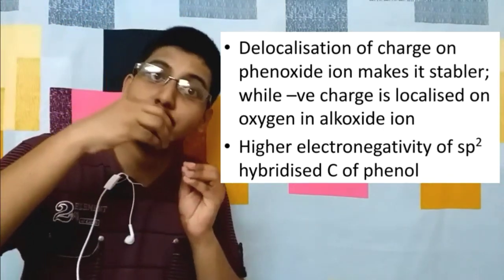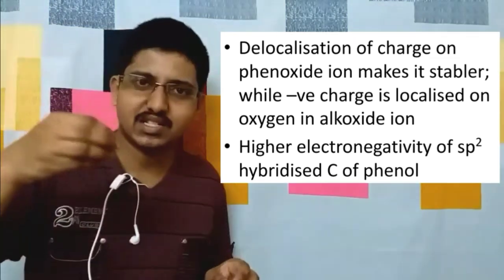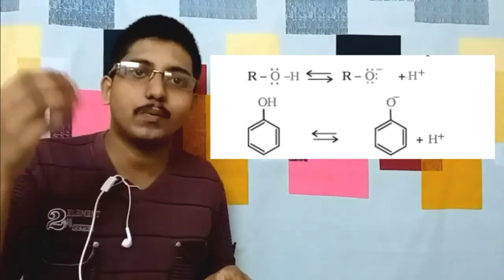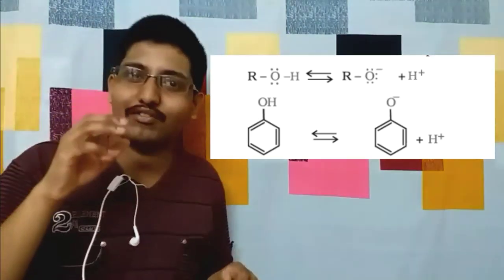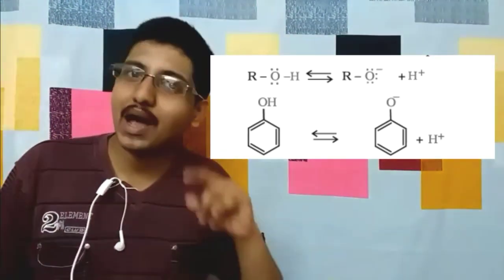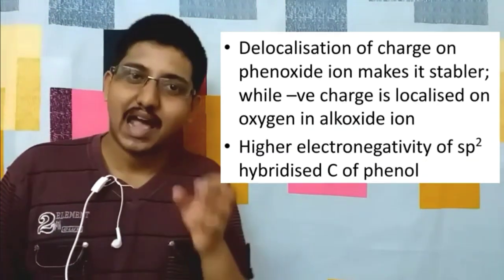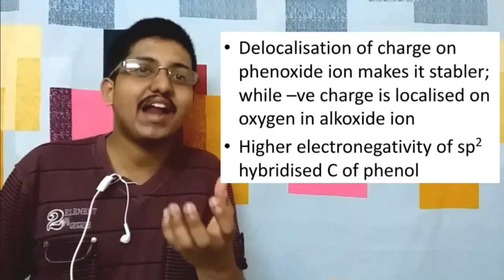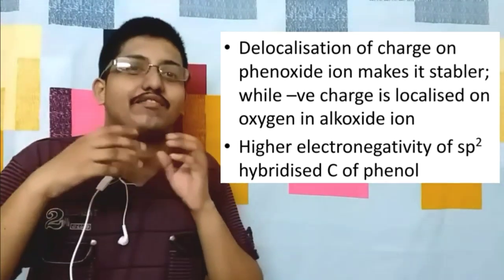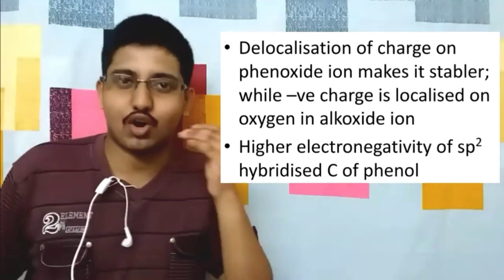Another reason is that in phenols the O-H group is attached to an sp2 hybridized carbon atom of benzene, whereas in alkanols the O-H group is attached to an sp3 hybridized carbon atom. Since sp2 hybridized carbon is more electronegative than sp3, the polarity of the O-H bond is increased, making it easier to remove the hydrogen atom. Because of these two reasons, phenols are stronger acids than water and alcohols.